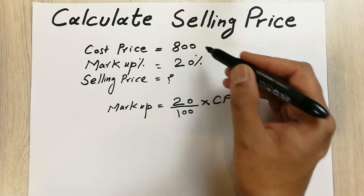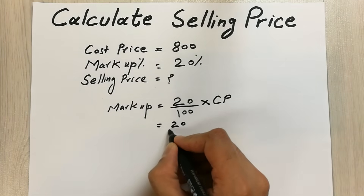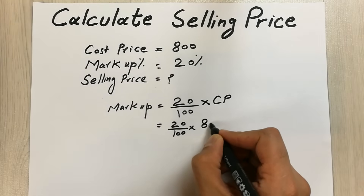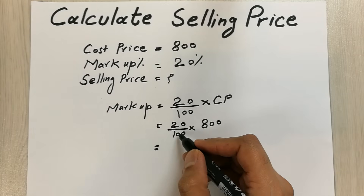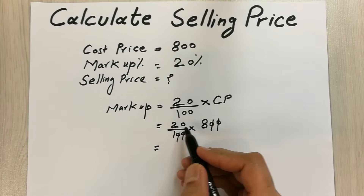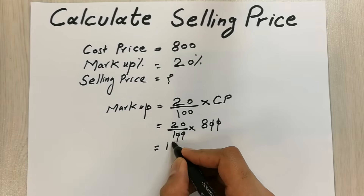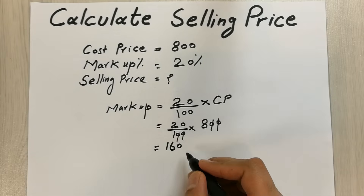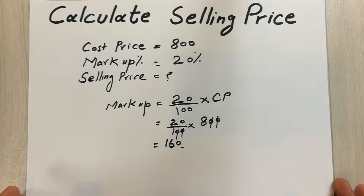Our cost price here is 800. So what we do is divide 20 by 100 and multiply it with 800. The two zeros cancel out, and 20 multiplied by 8 gives us 160. So 160 is our markup amount.